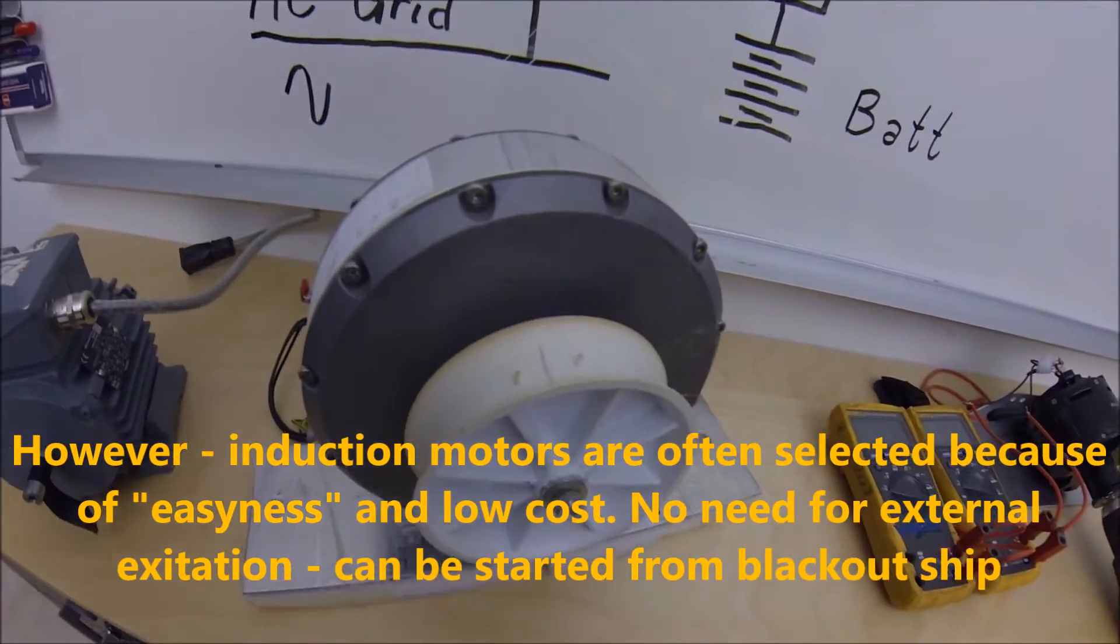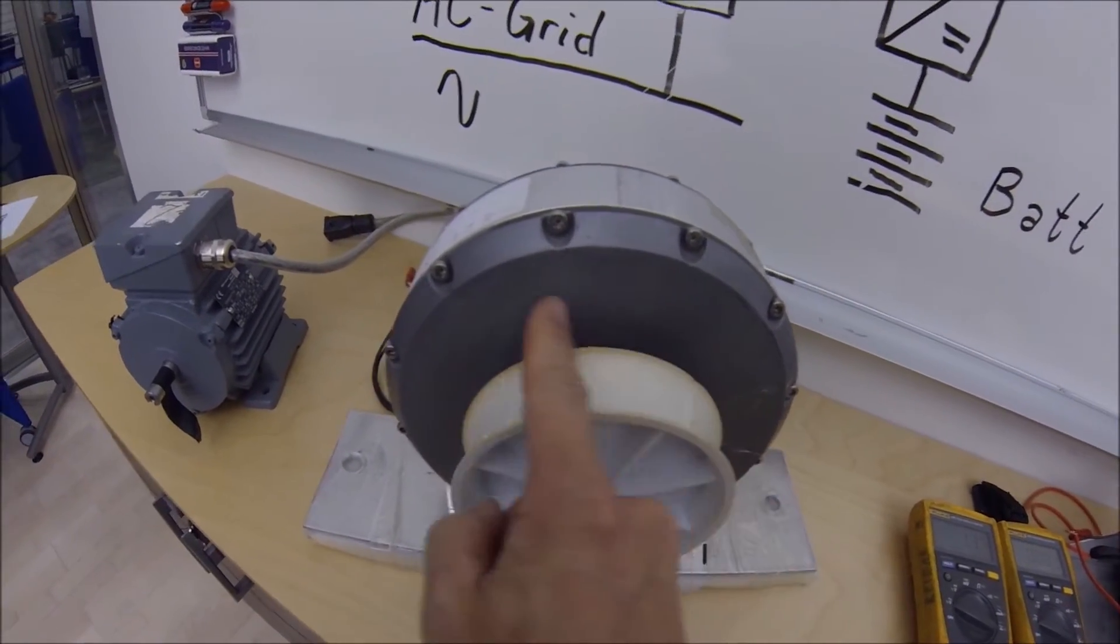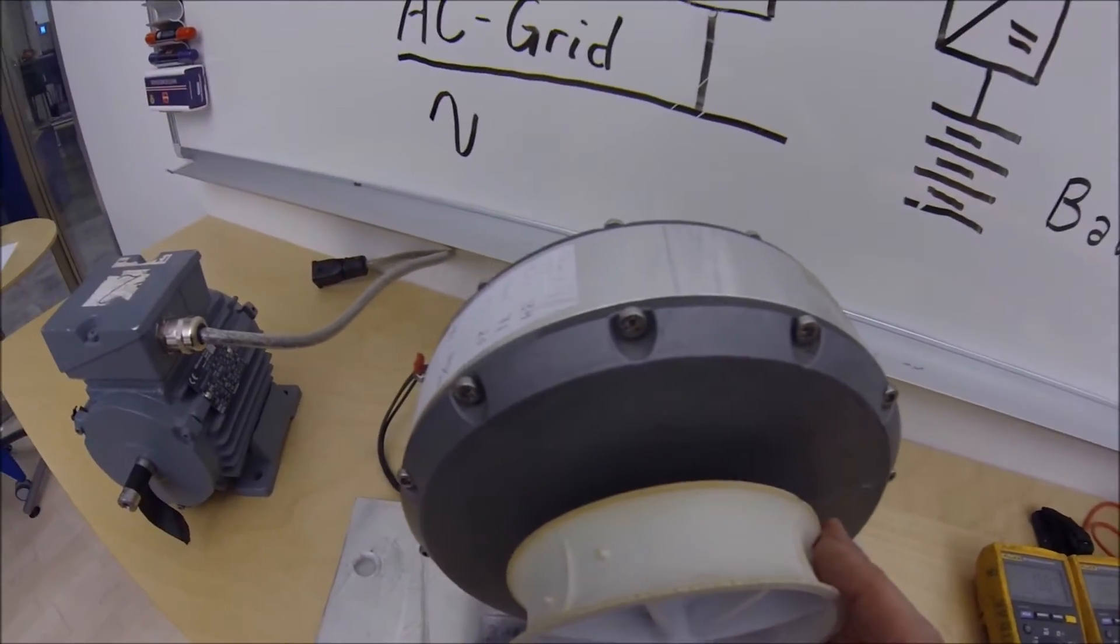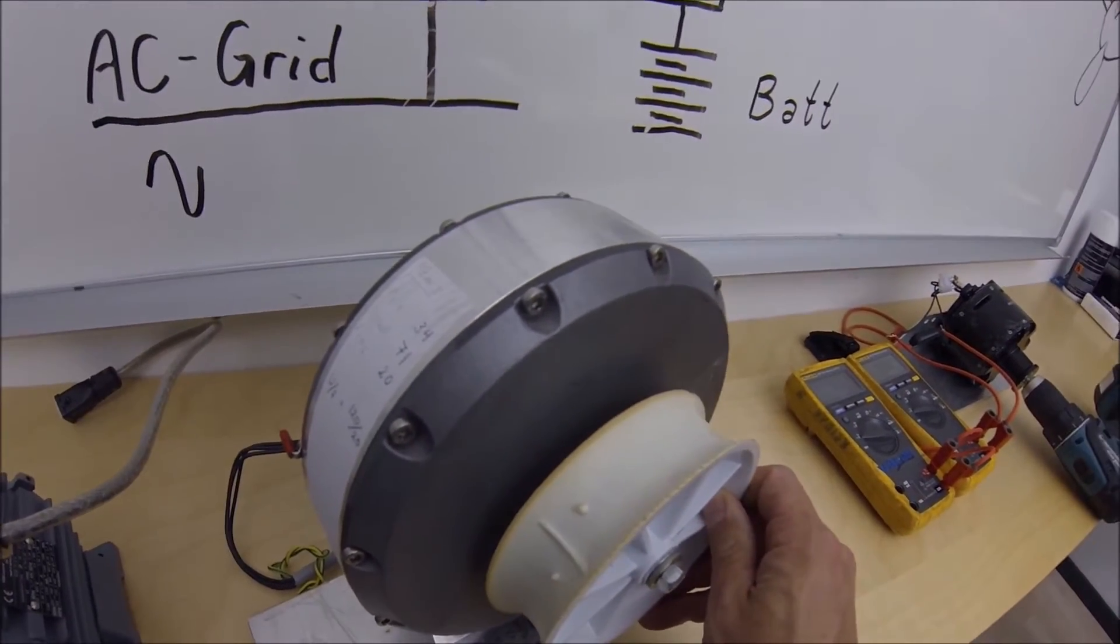Synchronous machines are constantly magnetized by its permanent magnets. This means that the losses you see on the induction motor is quite lower. It also has a higher efficiency at especially low RPMs.